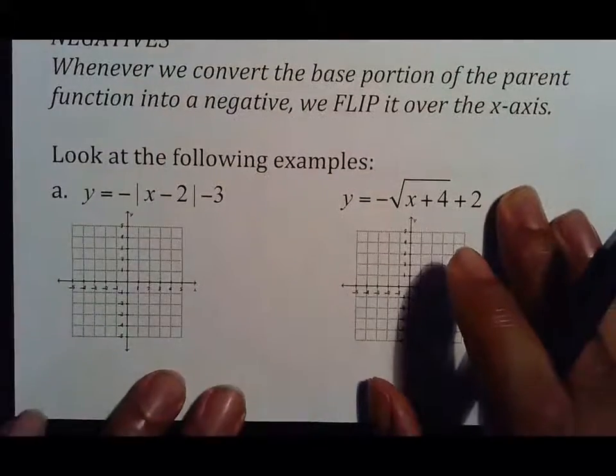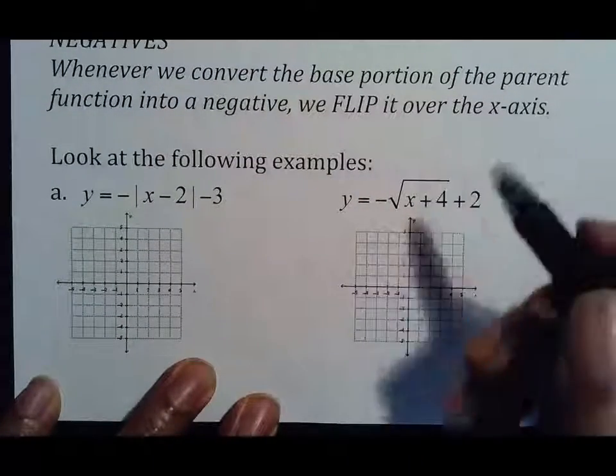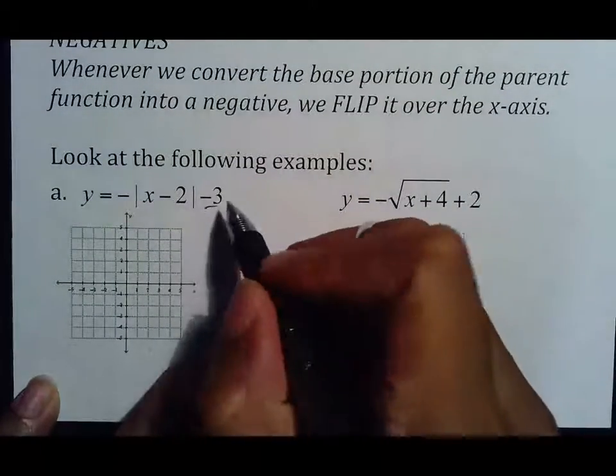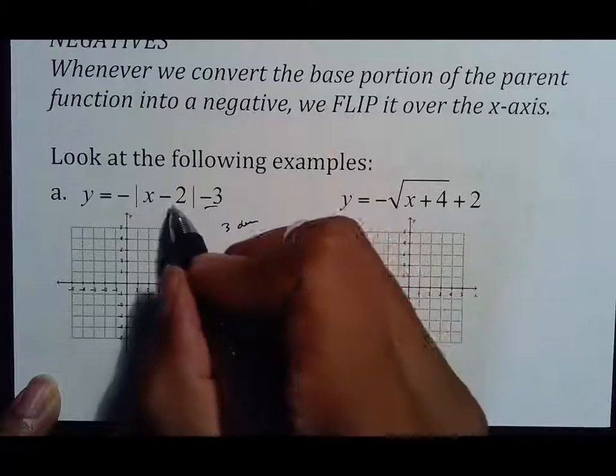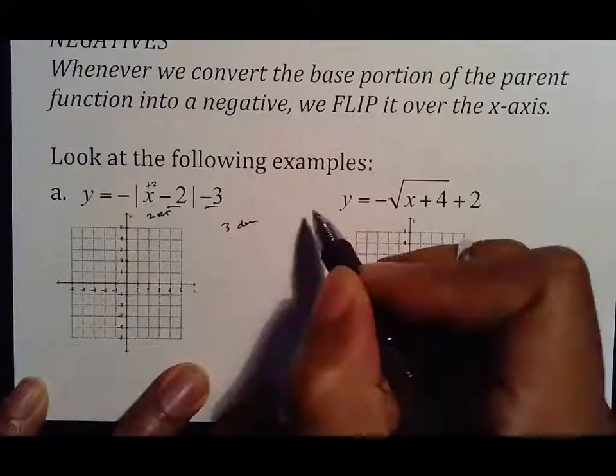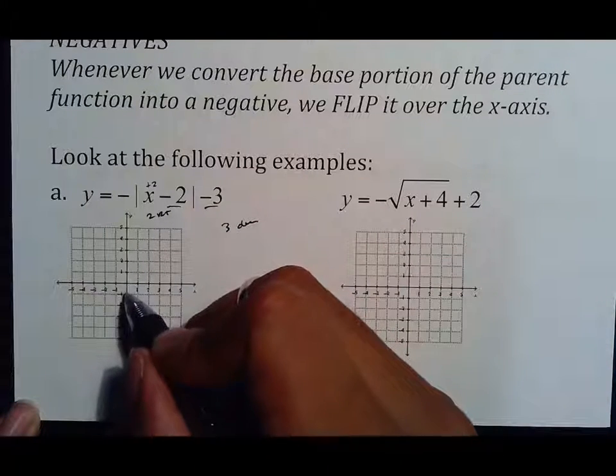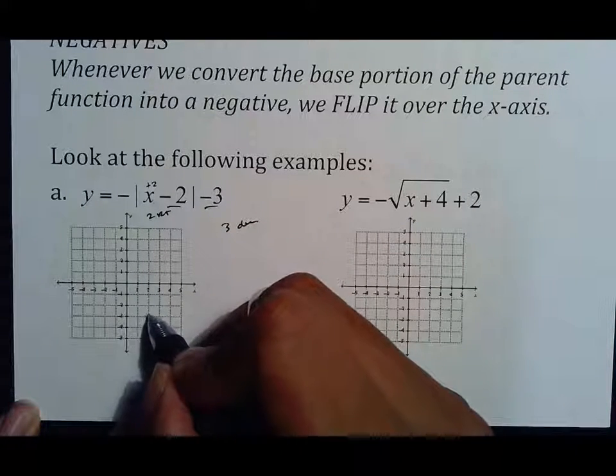So here's what we do now. If you have to do this, first off, look at your shift. So this is three down, because that's an outside number, right? Inside number makes me think opposite, so two right. And so I go three down, one, two, three, and two right. Boom.